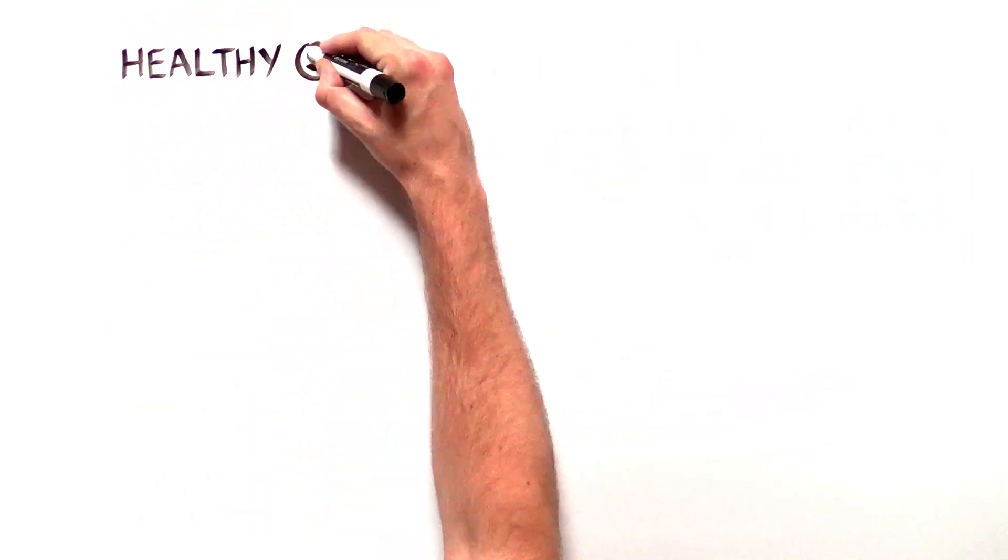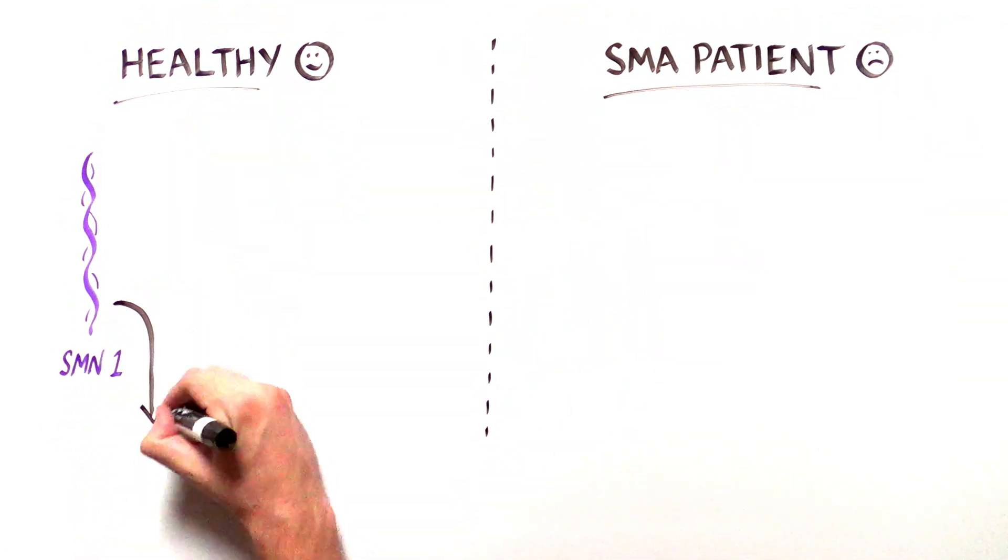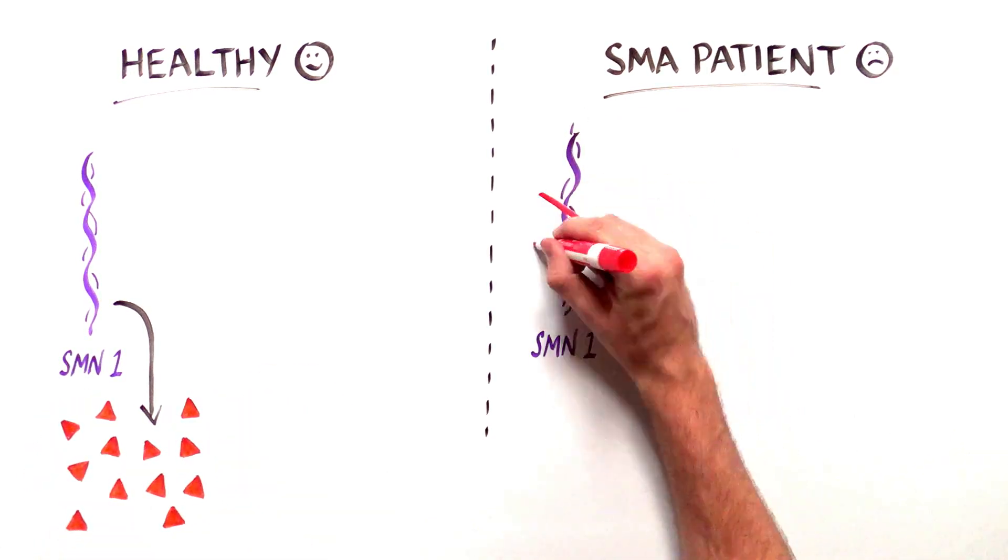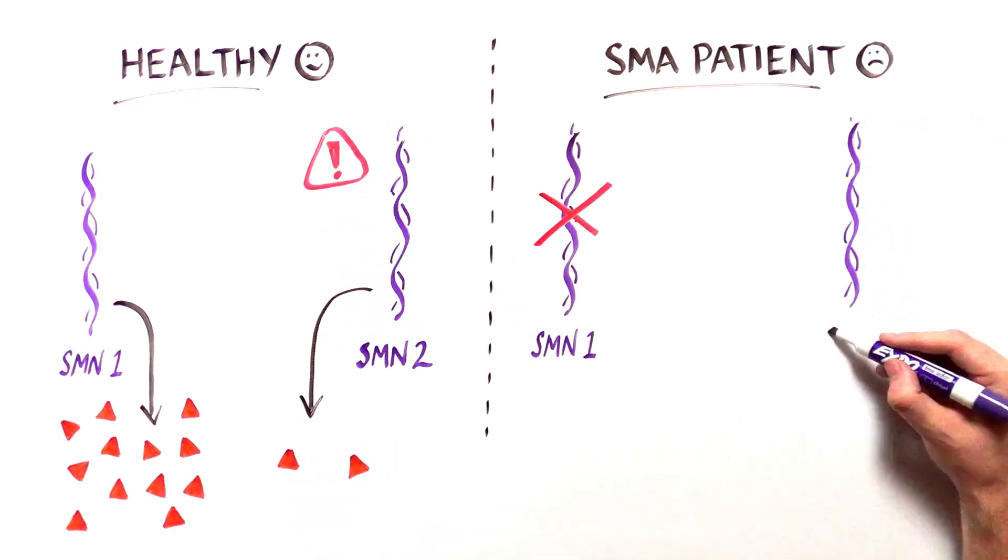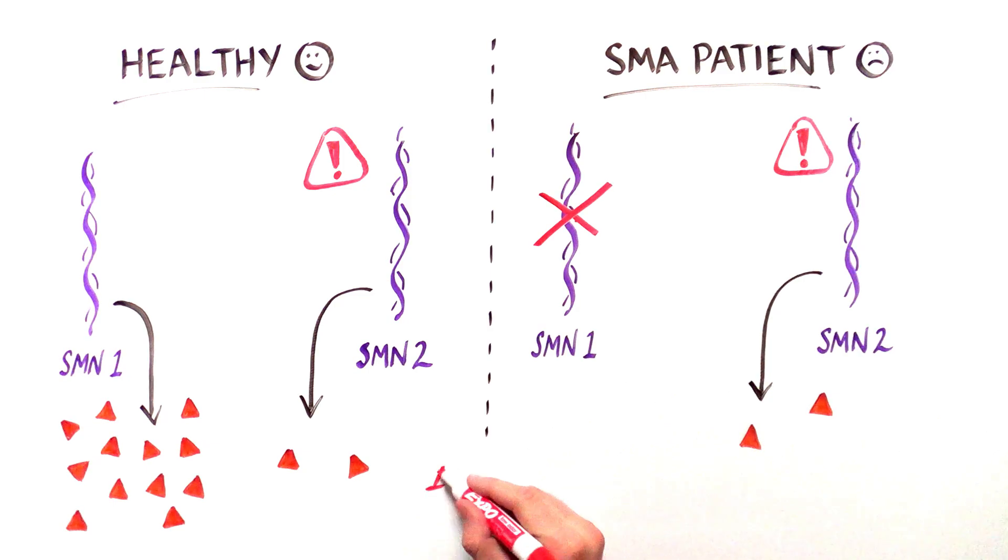The SMN1 gene which produces the SMN protein is missing or damaged beyond repair in SMA patients. Humans have a second SMN-producing gene called SMN2, but this gene is a poor backup because it produces very little functional SMN protein.